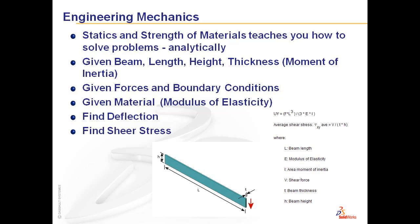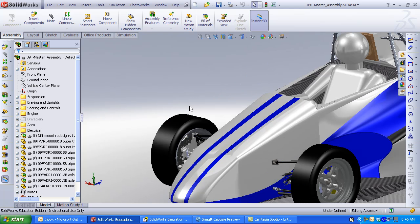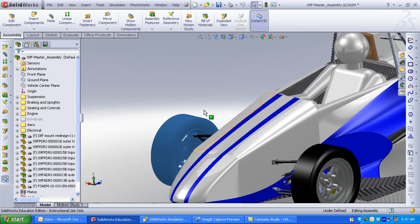You're given a beam — length, height, thickness — and you can calculate moment of inertia. You're given forces, boundary conditions, and material to determine modulus of elasticity. From there, you can find deflection and shear stress. Perhaps you use a formula, perhaps you use integration. Let us take a look at the University of Manitoba's Formula SAE car.